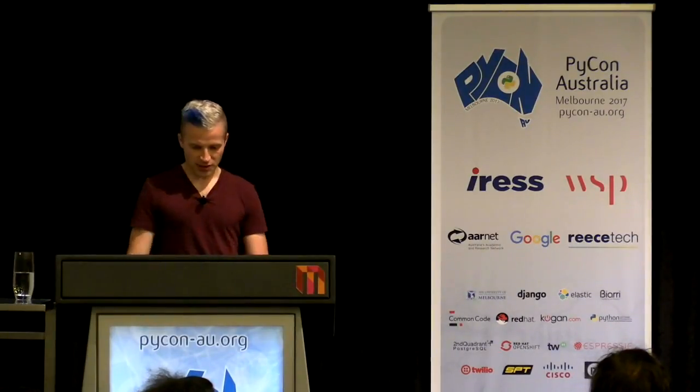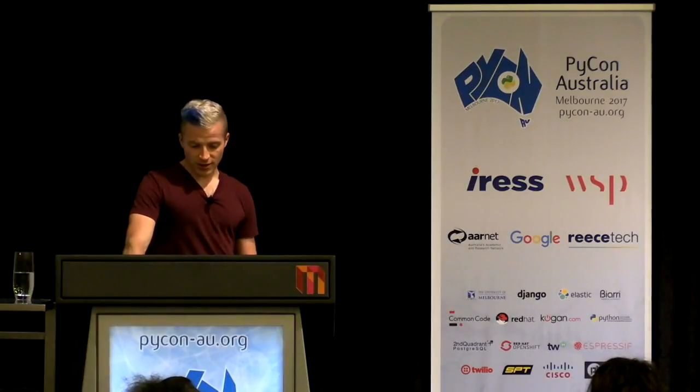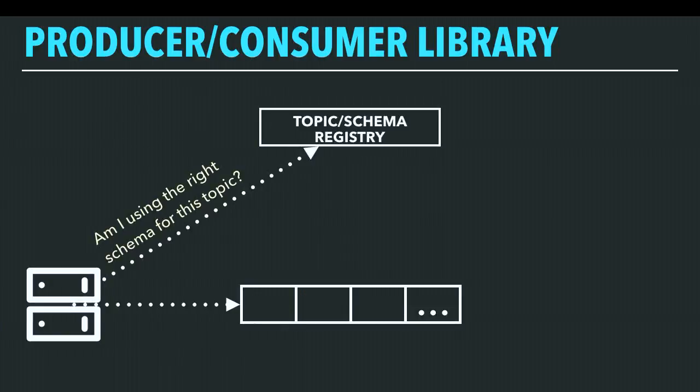We use it in two places. Before you produce a record to a topic, you look up the correct schema for that topic. Kafka comes with producer and consumer implementations for a whole bunch of languages, but like Kafka itself, those just know about byte streams — Kafka brokers don't view records as anything other than binary blobs, and this is part of why it's so fast. So we built a wrapper around these libraries to handle the serialization and validation.